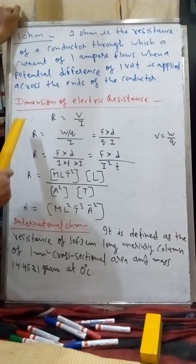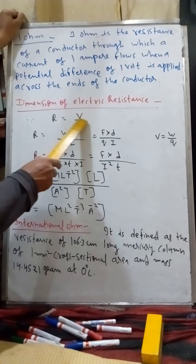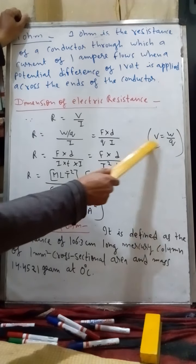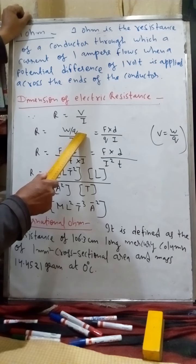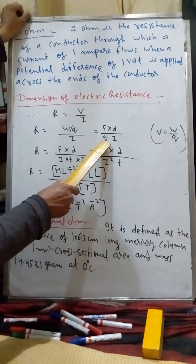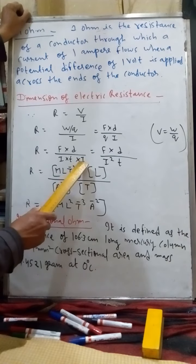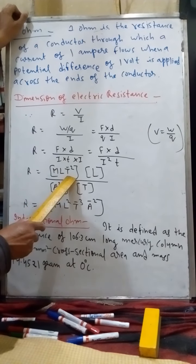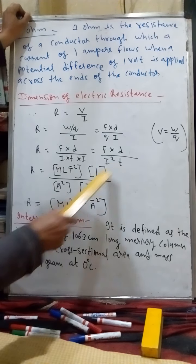Now let's find the dimension of electric resistance. R = V/I. Potential difference V equals work done per unit charge (W/Q) from electrostatics. So R = W/(Q×I). Work W equals force × displacement. Q = I×T from current electricity (charge = current × time). Substituting: R = F×d / (I² × T).